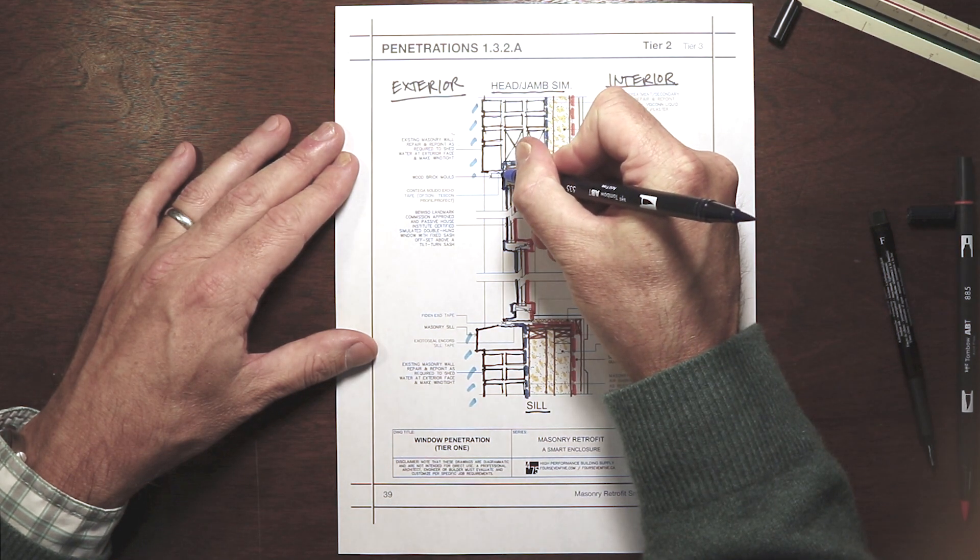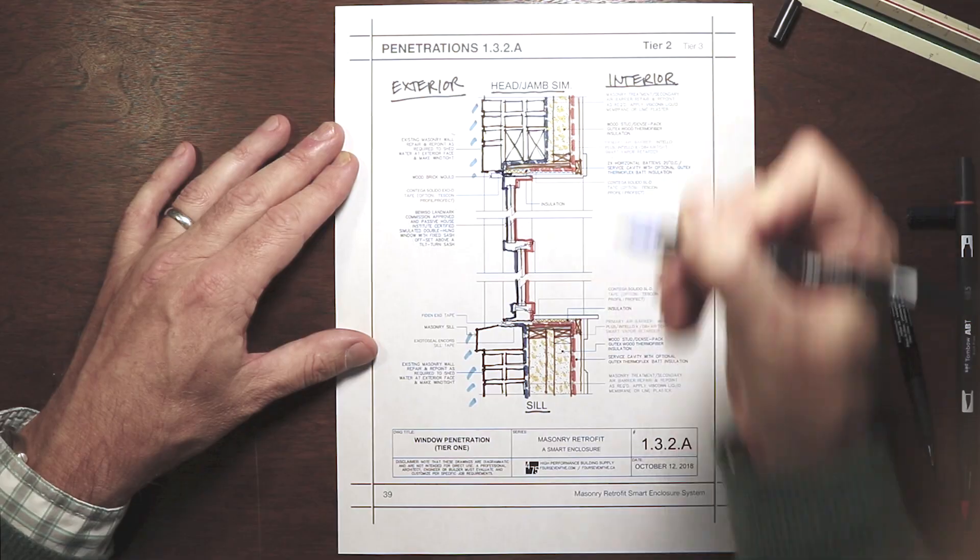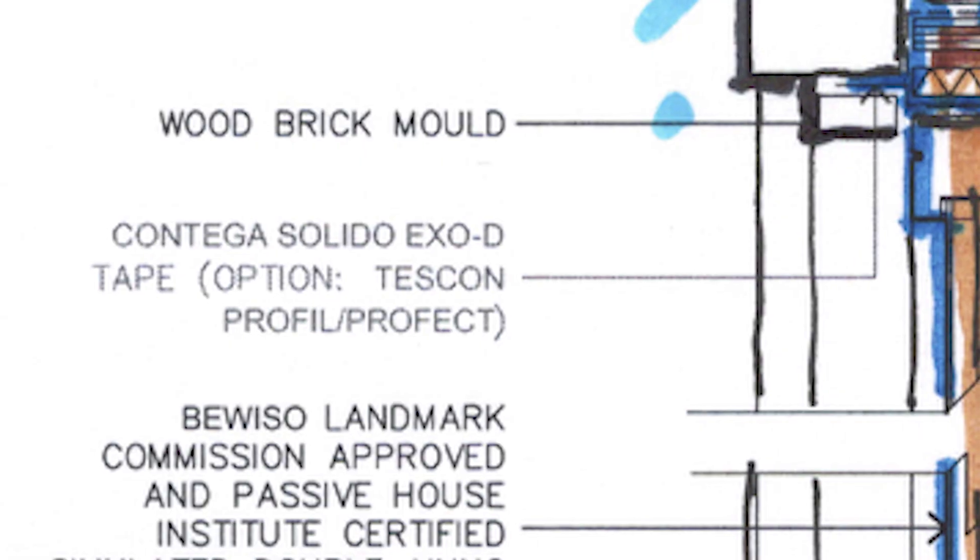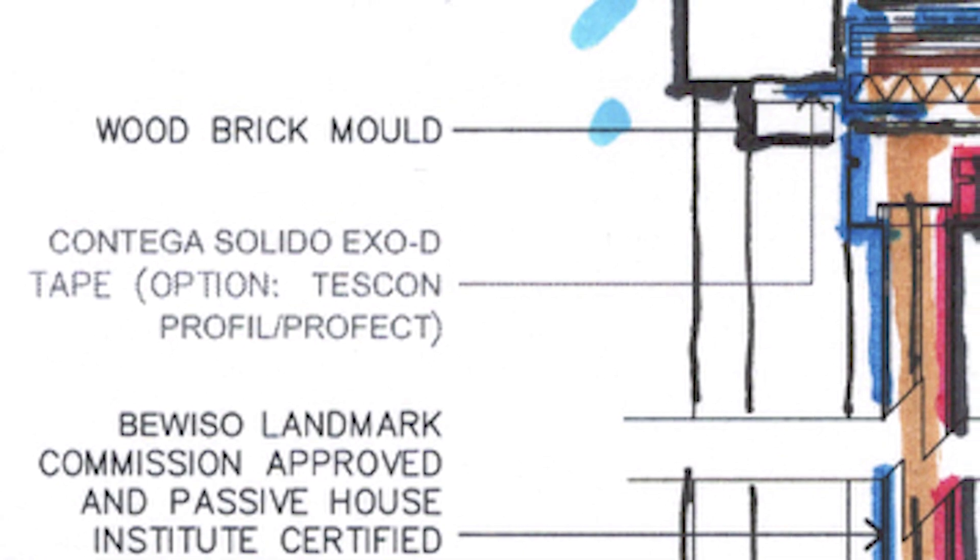To the exterior, jamb and head, the weatherproofing and secondary air barrier connection is provided by Contiga Solido EXO, blind taping again, or with Tescon Proful or Profect face taping.